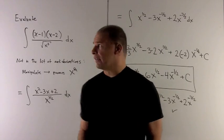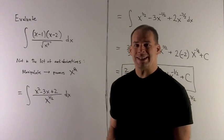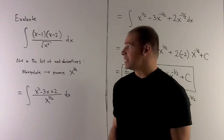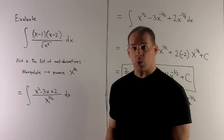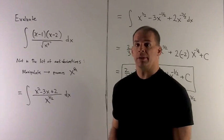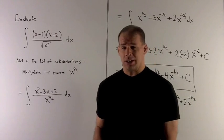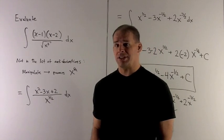Here, we consider the antiderivative of x minus 1 times x minus 2 divided by the square root of x cubed. If we go to our list of antiderivatives, we won't find this function on the list.